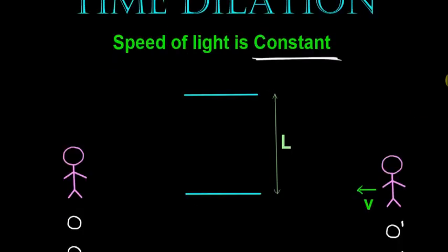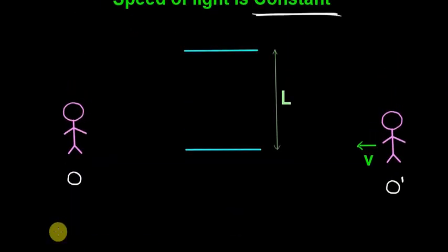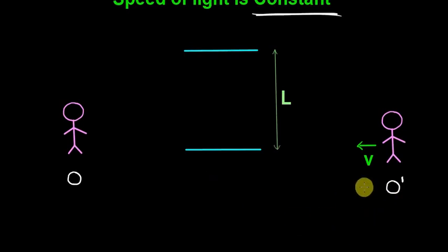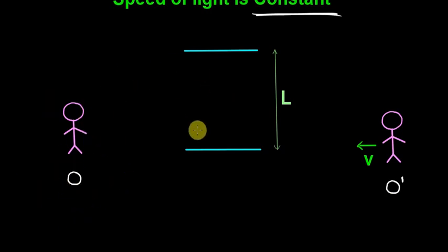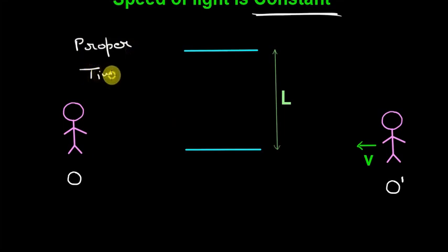Let's understand this diagram. This is observer O, which is at rest with respect to these two mirrors, which are L length apart. And this is observer O dash, which is moving with velocity V in this direction. These two mirrors are at rest with respect to observer O, so whatever this observer measures for these mirrors, that time is called proper time.